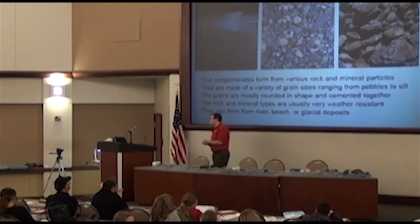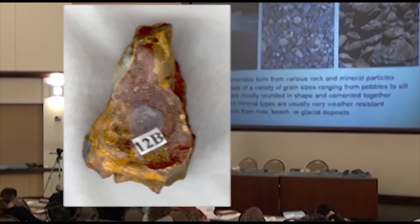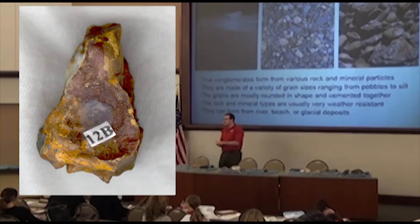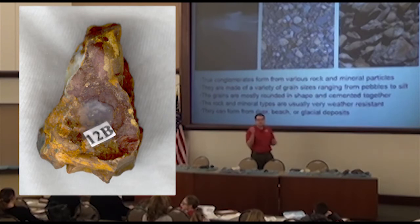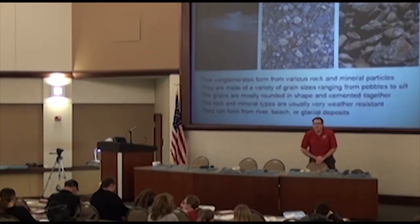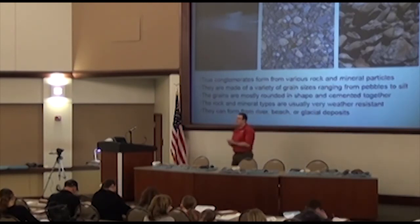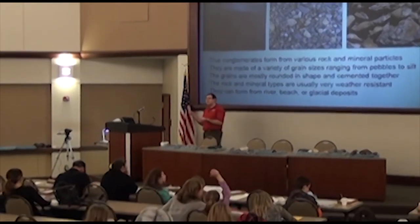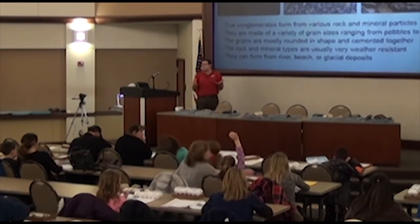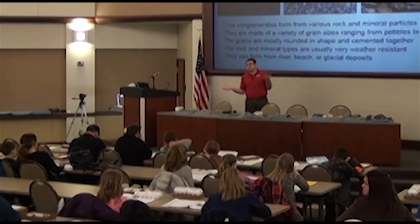Next we're going to talk about conglomerate — grab 12B. When we think about conglomerate, we think about little pebbles stuck together. Would you say your sample looks like small pebbles stuck together? Probably. Are the pebbles all the same size, or do they vary? They do vary in size — they're not the same. So it's poorly sorted. Are all the pebbles the same color or different types of rocks and minerals? They're different. So they're often from different materials and often poorly sorted.